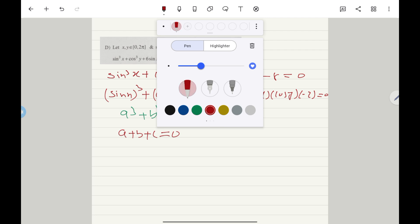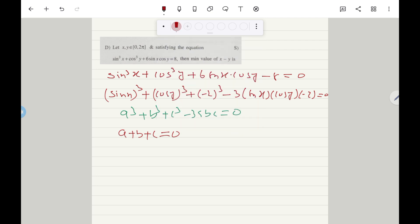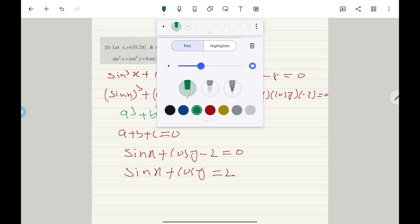Okay, now a + b + c = 0, here a means sinx plus b means cosy, c means minus 2 equal to 0. Or another way to say that sinx + cosy = 2. So here we need to observe one thing students,